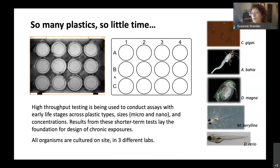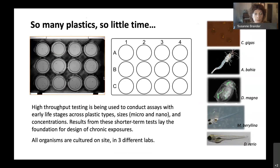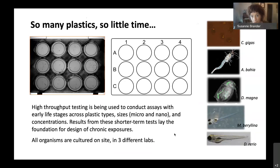Microplastics are a broad category of pollutants — you can't test one type and assume the response carries over to other polymers. One way to tackle this is by using high-throughput testing approaches, which is what we're doing at Oregon State with early life stages across plastic types, sizes, and concentrations to get at dose-response curves. Results from these shorter-term tests will lay the foundation for the design of chronic exposures, looking at effects on reproduction and potentially offspring — effects we see with soluble chemicals that we'd also like to probe with plastics.